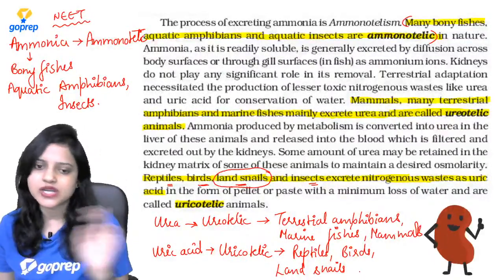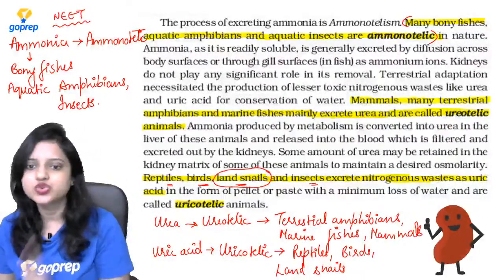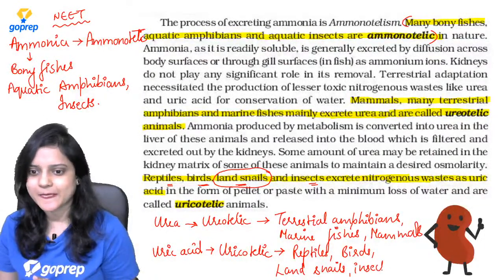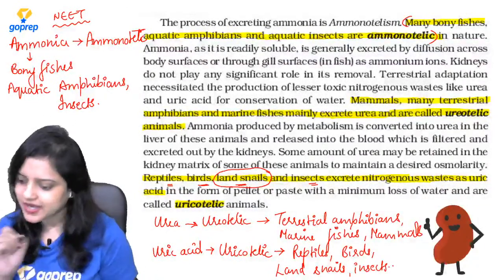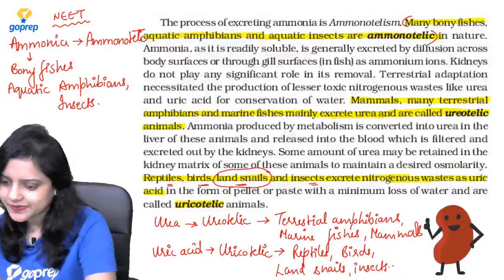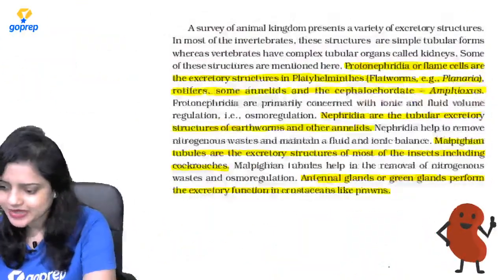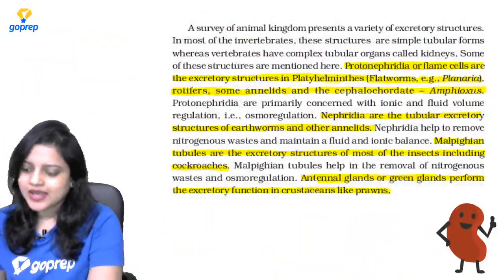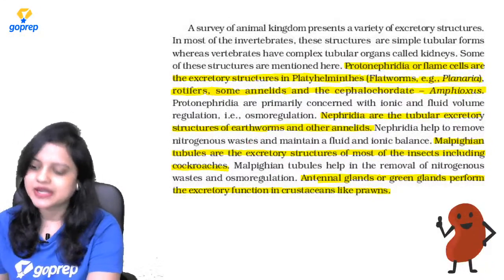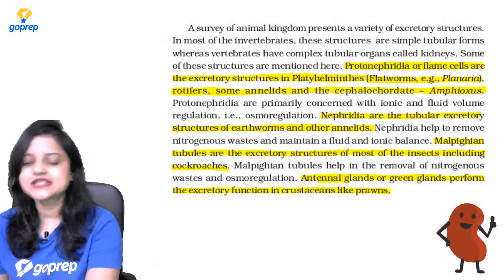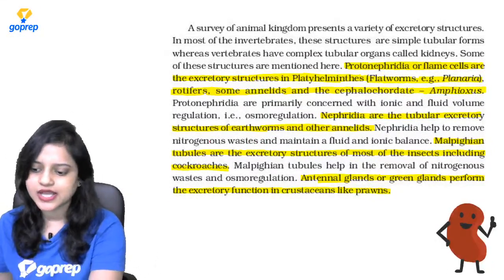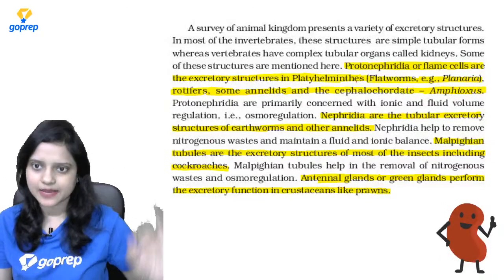Uricotelic organisms are those that eliminate uric acid. These include reptiles, birds, land snails, and insects. Land snails are uricotelic — not ammonotelic. This is a common question in exams. Remember: land snails are uricotelic.